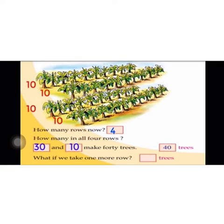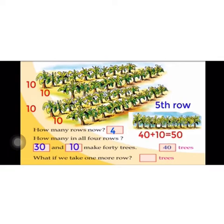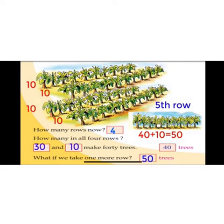What if we take one more row now? How many rows? 40 plus ten is equal to 50. Right? Fourth row is 40 banana trees. Fifth row is 10 banana trees. Total 50 banana trees. Yes, 60 banana trees.